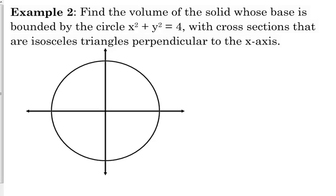Let's look at another one. Find the volume of the solid whose base is bounded by the circle X squared plus Y squared equals 4, with cross-sections that are isosceles triangles perpendicular to the x-axis. So I went ahead and drew the base here. The base is the circle. So the cross-sections are perpendicular to the x-axis. So here's an example of a cross-section. Now I'm going to draw what the cross-section actually is over here so I can visualize it when I'm setting up my area formula.